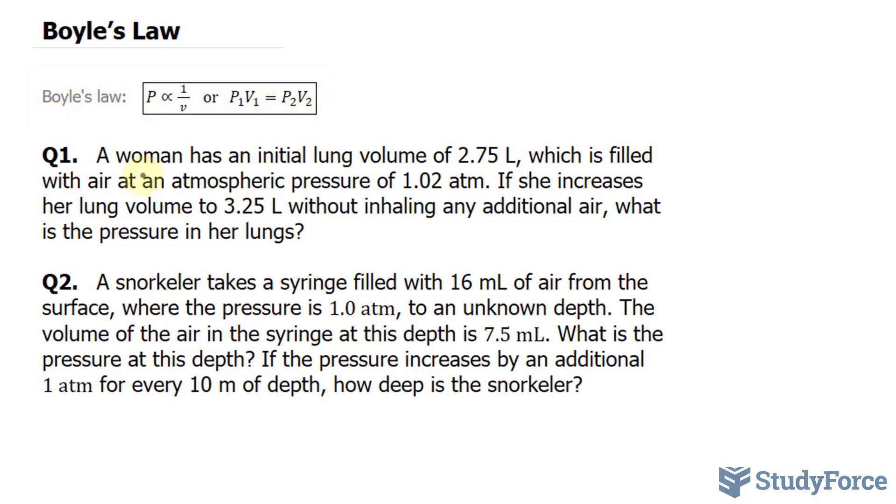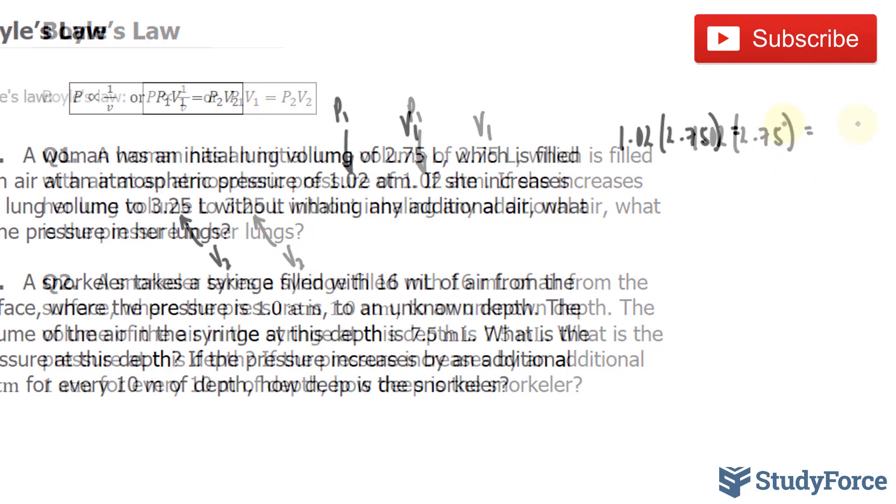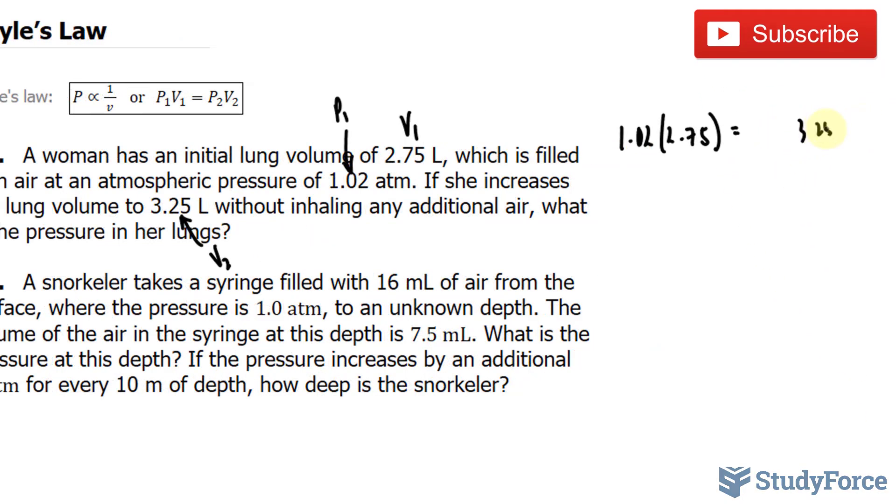So what we have is an initial volume of 2.75, which is V1, and an initial pressure of 1.02, so I'll call that P1. I'll fill this in, I have 1.02 times 2.75 is equal to, this is our V2, 3.25, and we're looking for P2.